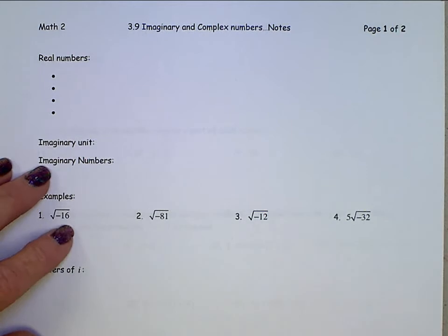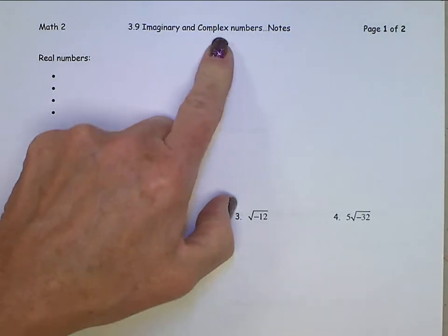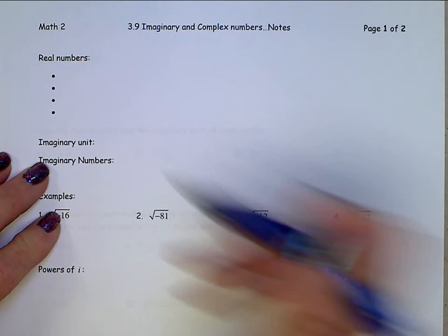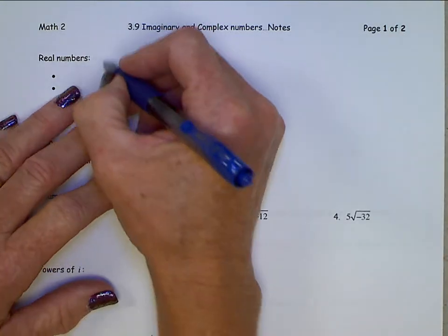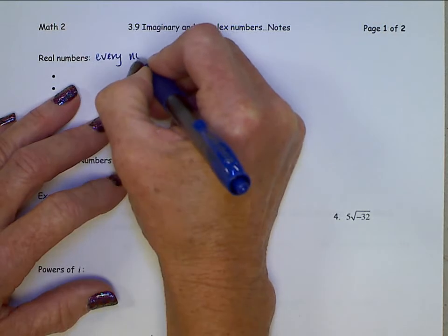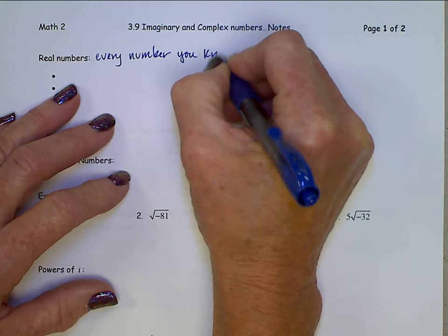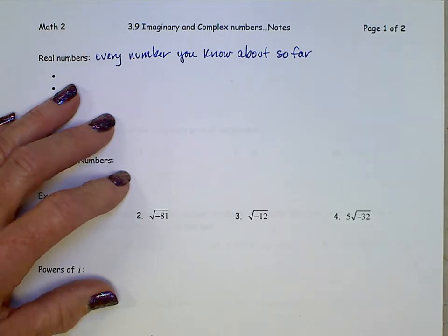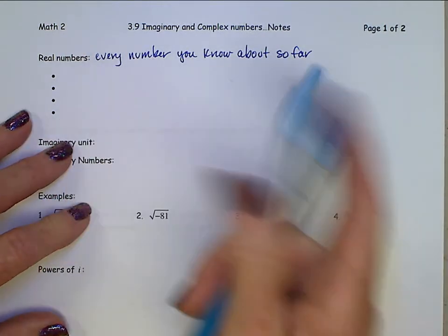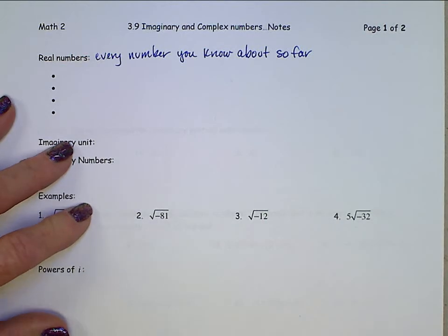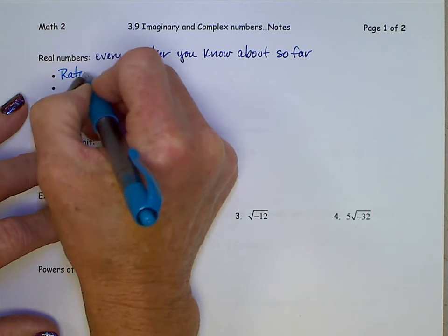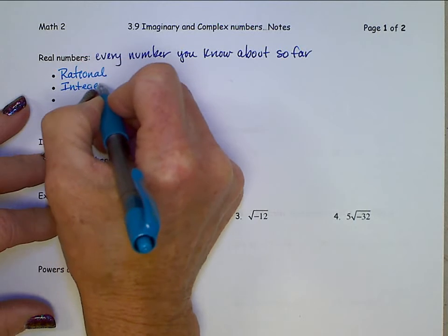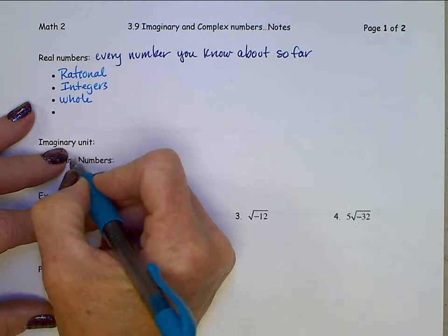Today we're going to be talking about imaginary numbers and complex numbers — numbers that you have not seen before ever. Up until now you've known about real numbers, which are every number you know about so far. Last week we talked about that Venn diagram, that big box that had all those sets of numbers in it — the rational numbers, the integers, the whole numbers, and the irrational numbers.